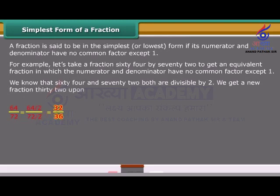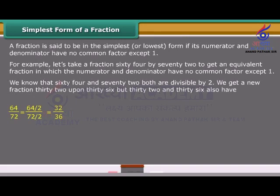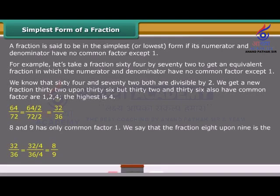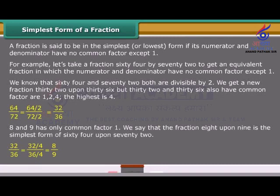But 32 and 36 also have common factors: 1, 2, 4. The highest is 4. 8 and 9 has only common factor 1. We say that the fraction 8 upon 9 is the simplest form of 64 upon 72.